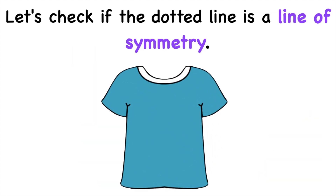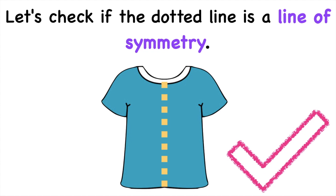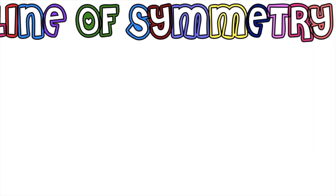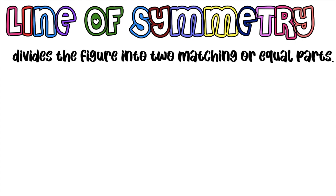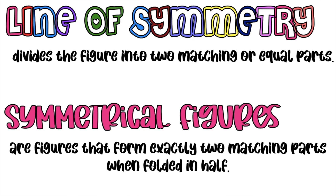How about this one? A t-shirt. I will draw my dotted line here. Is the dotted line a line of symmetry? Good job, children. It is because it divides the figure into two equal parts. Always remember, children, line of symmetry divides the figure into two matching or equal parts. And symmetrical figures are the figures that form exactly two matching parts when folded in half.